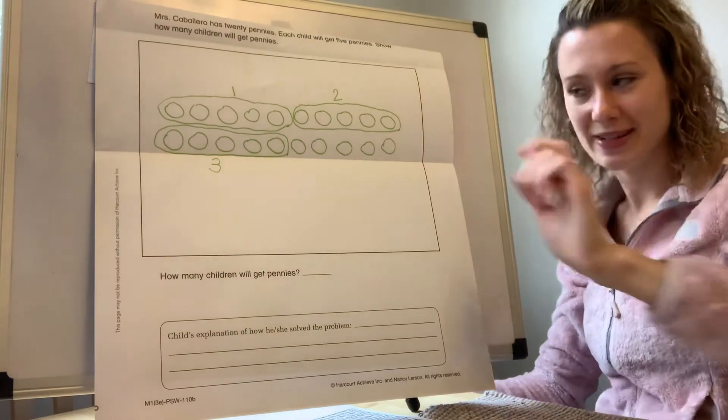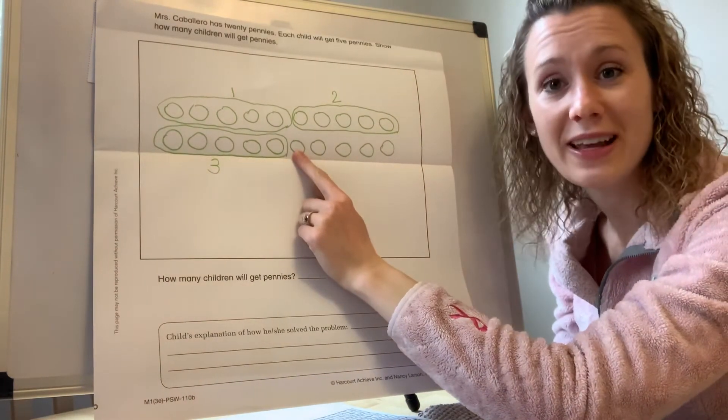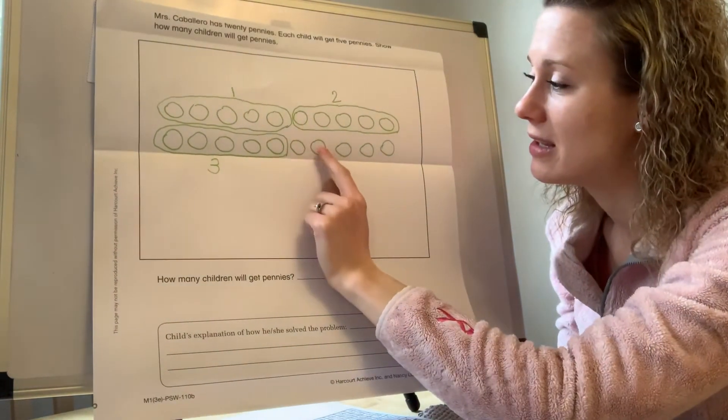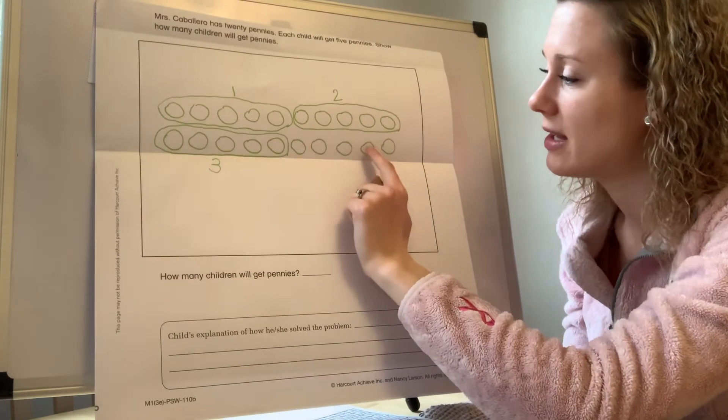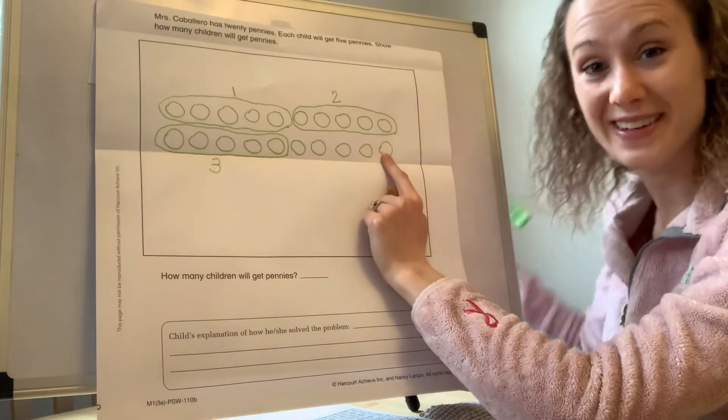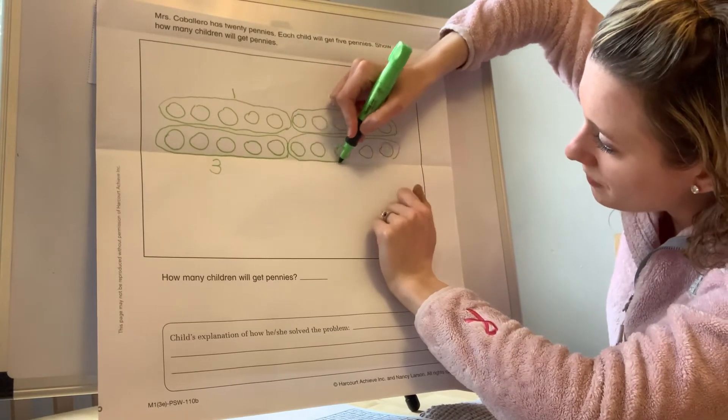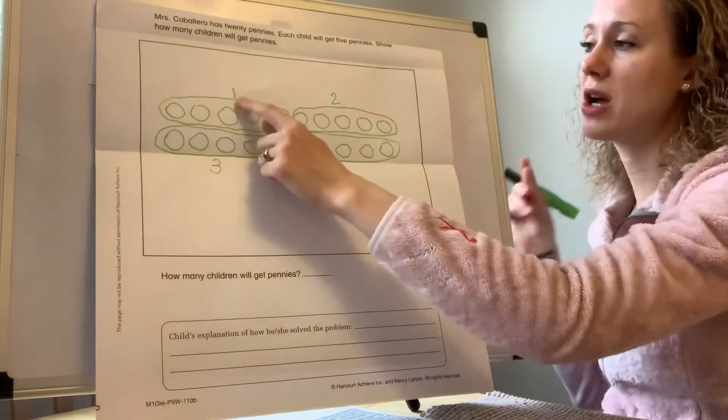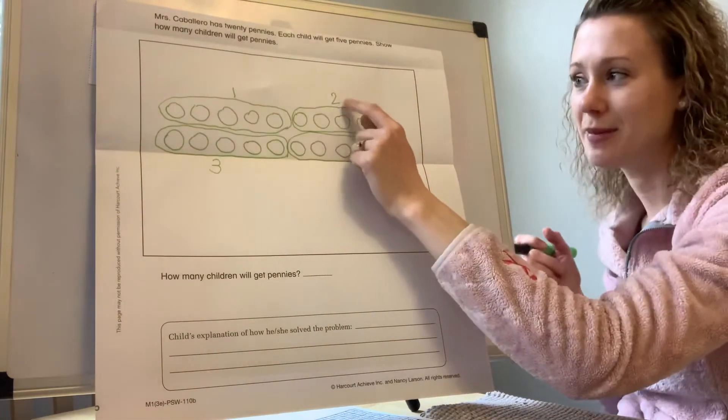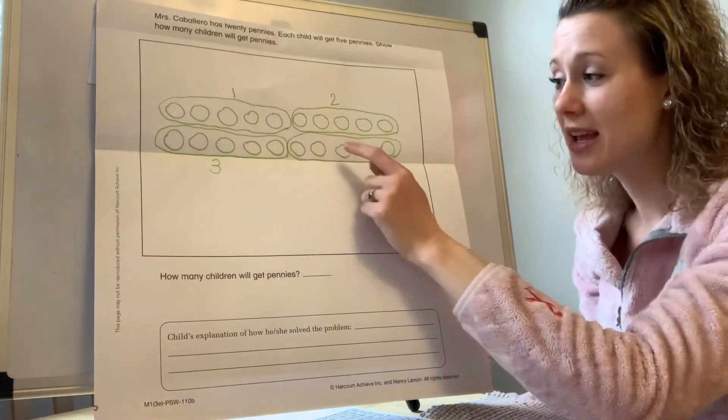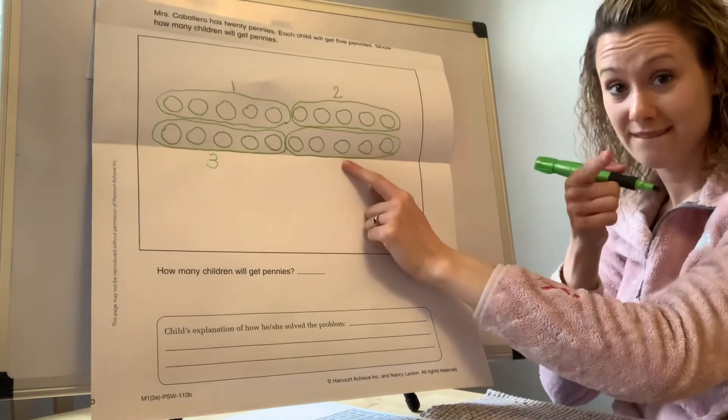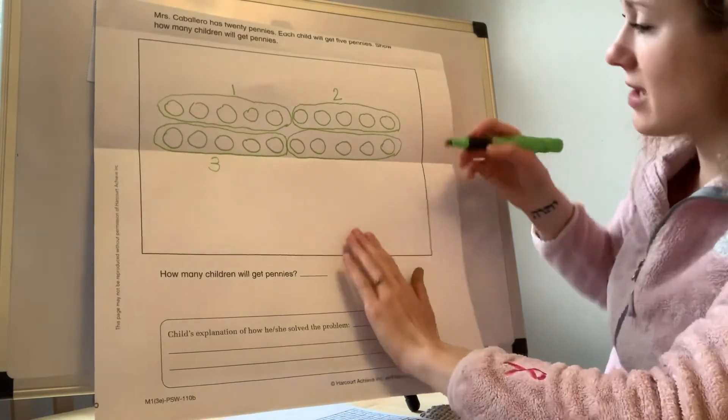All right, now let's do the last one. Count with me. Ready? Go. One, two, three, four, five. All right, now these five need to go into a circle. Awesome. So child number one, child number two, child number three, child number four. You got it.